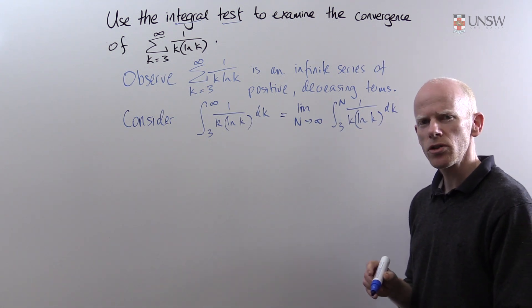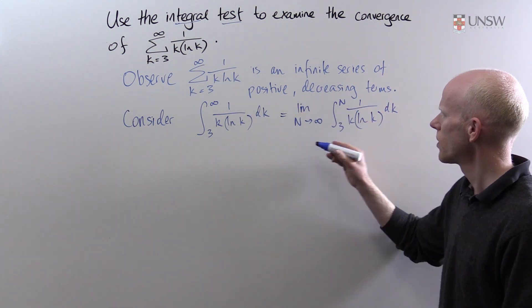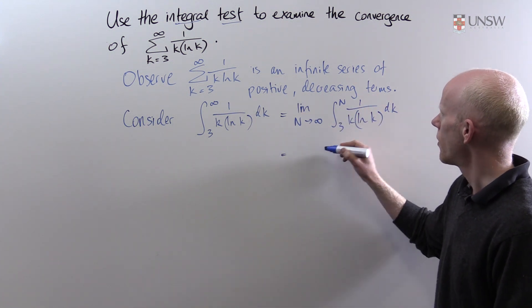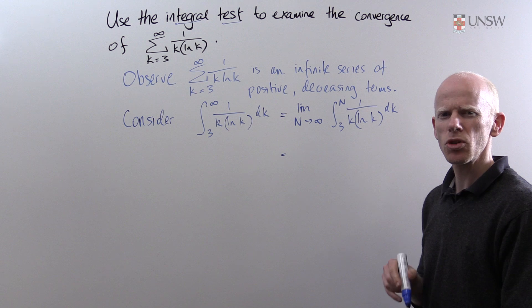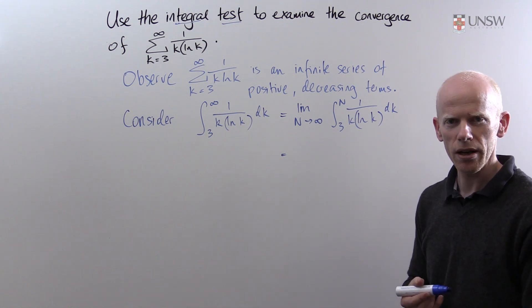And I'm going to rewrite my integrand with a 1 over k on top. What I'm doing is dividing numerator and denominator by k.